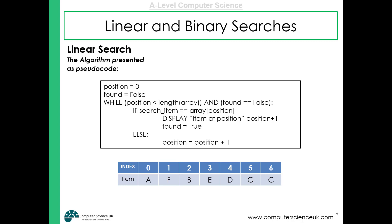We check whether the item we're looking for is at that particular location. If it is, we display the item at position plus 1 — because we're using indexes, if it was at index 0 we add 1 to give position 1. We then set the found flag to true so the algorithm knows not to repeat the while loop and can finish. Otherwise, we add 1 to our position variable to move to the next item. It repeats until either it reaches the end of the array or the found flag becomes true.